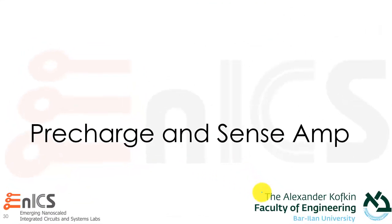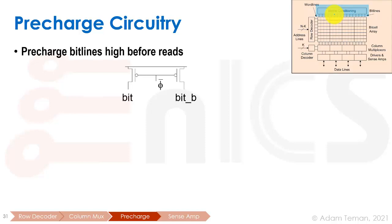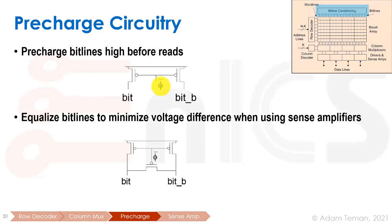That was the column multiplexer. Now let's go into the last part: pre-charge and sense amplifiers, which is what this figure calls bit line conditioning — how we actually treat the bit lines. We start with pre-charging before reads. Before a read, we have to bring the bit line and bit line bar up to VDD. That's easy: we put a PMOS in series with each, and connect the gate to a clock phase or self-timed signal that turns them on, pre-charges the lines, and then turns off.